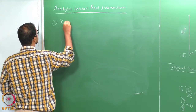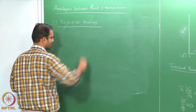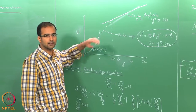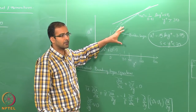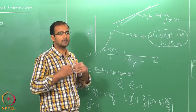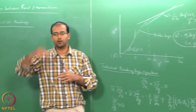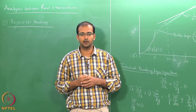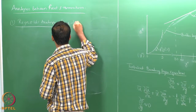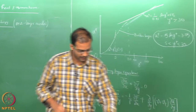The Reynolds analogy is the most basic and popular analogy between heat and momentum transfer. We now have the turbulent boundary layer with three layers: a linear variation in the laminar sublayer, a buffer layer, and a turbulent boundary layer. To start with, we assume the entire boundary layer is turbulent — there is no laminar sublayer, no buffer layer. This is called a one-layer model, and Reynolds analogy is derived based on this one-layer model, where only the turbulent boundary layer extends all the way from the wall to the edge of the boundary layer.